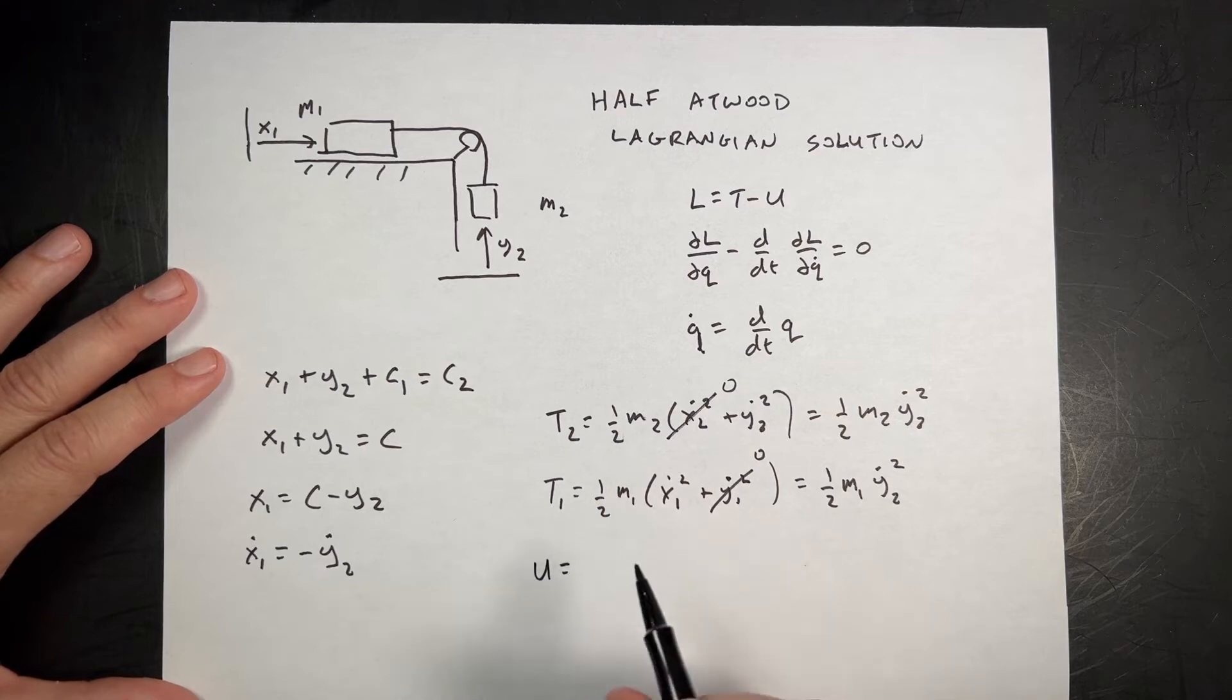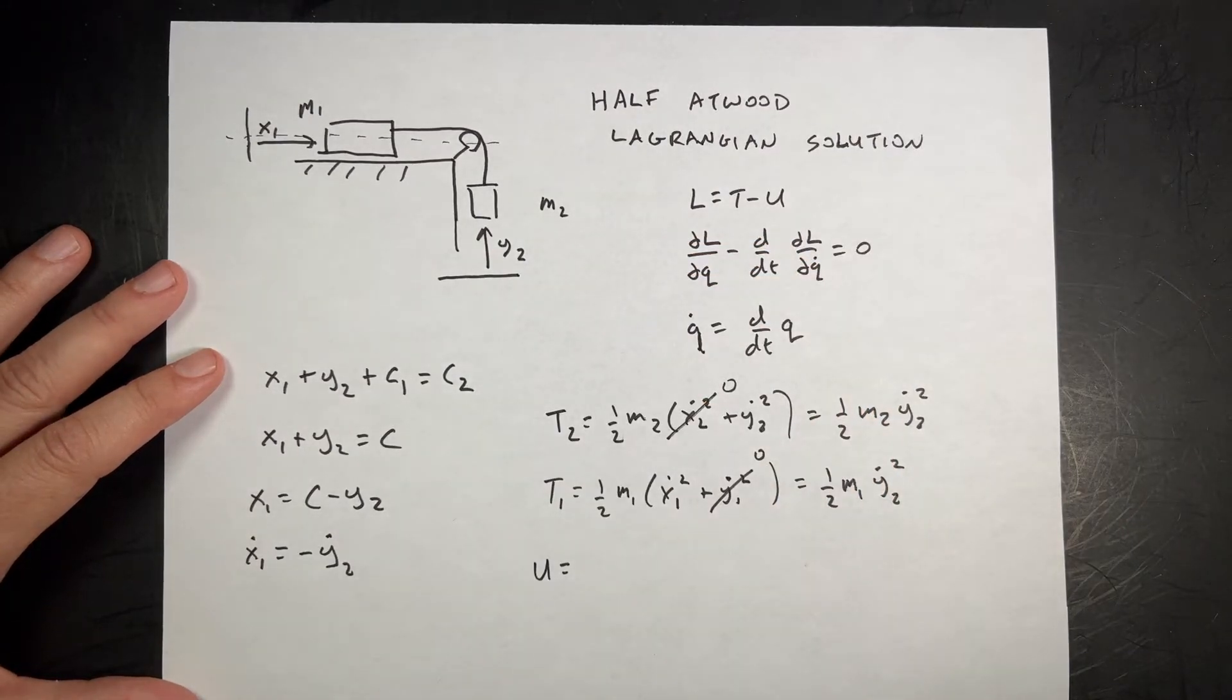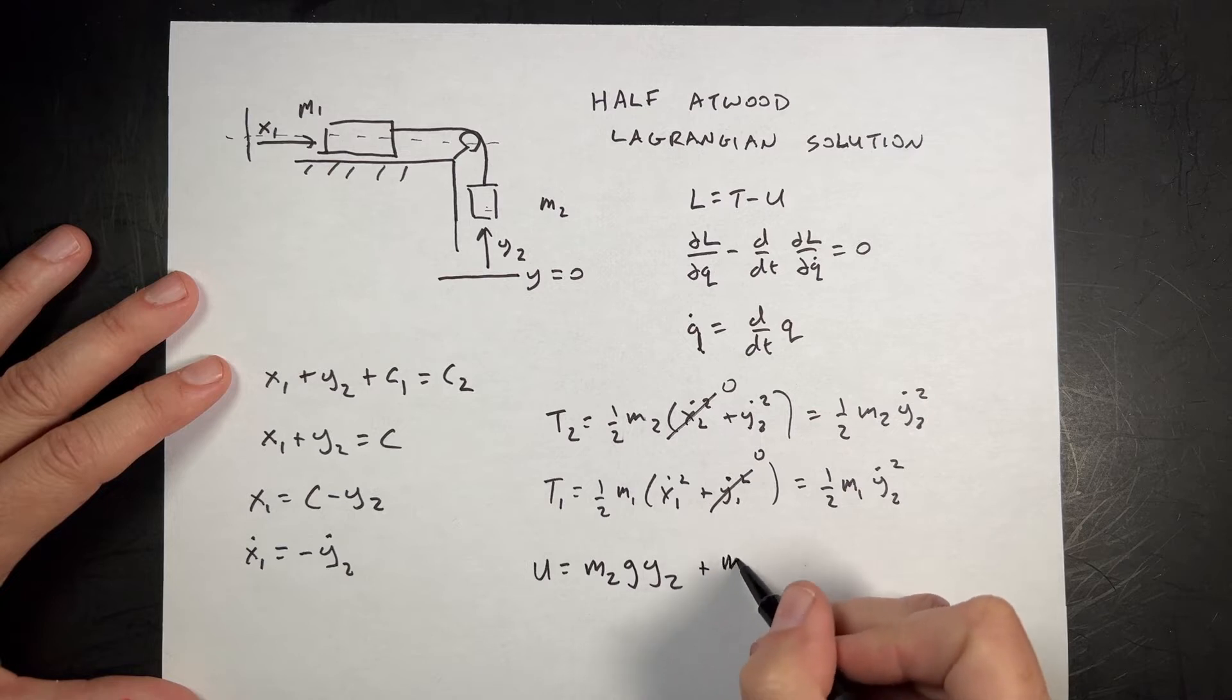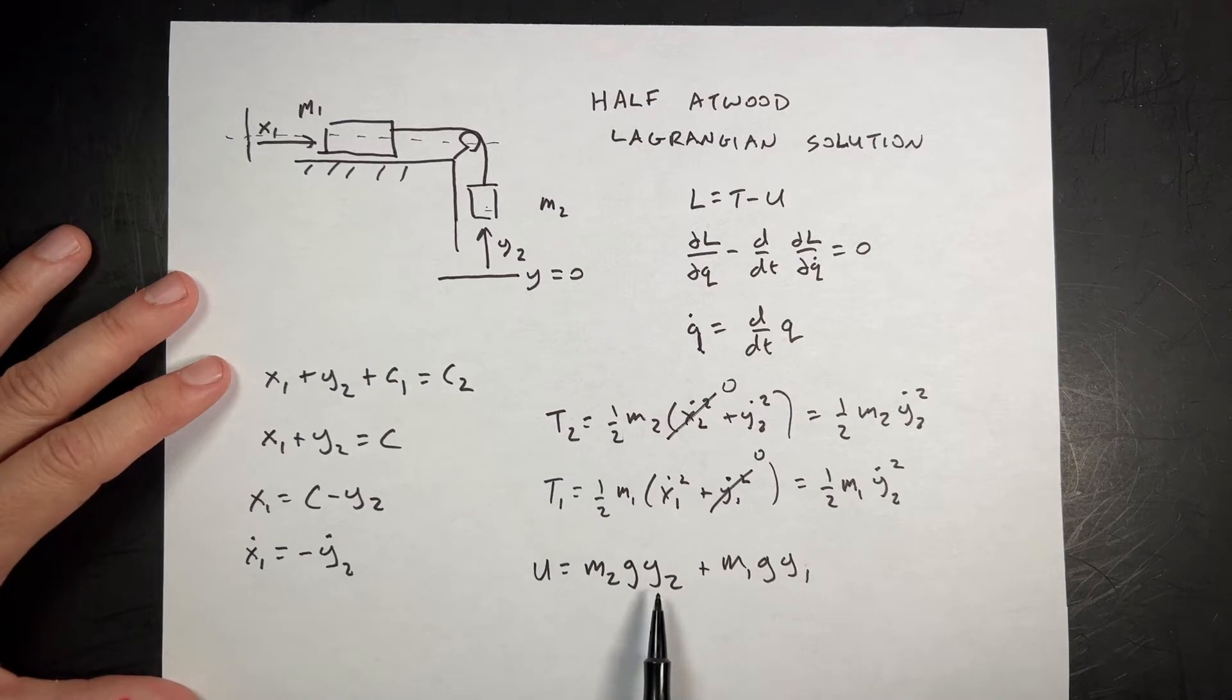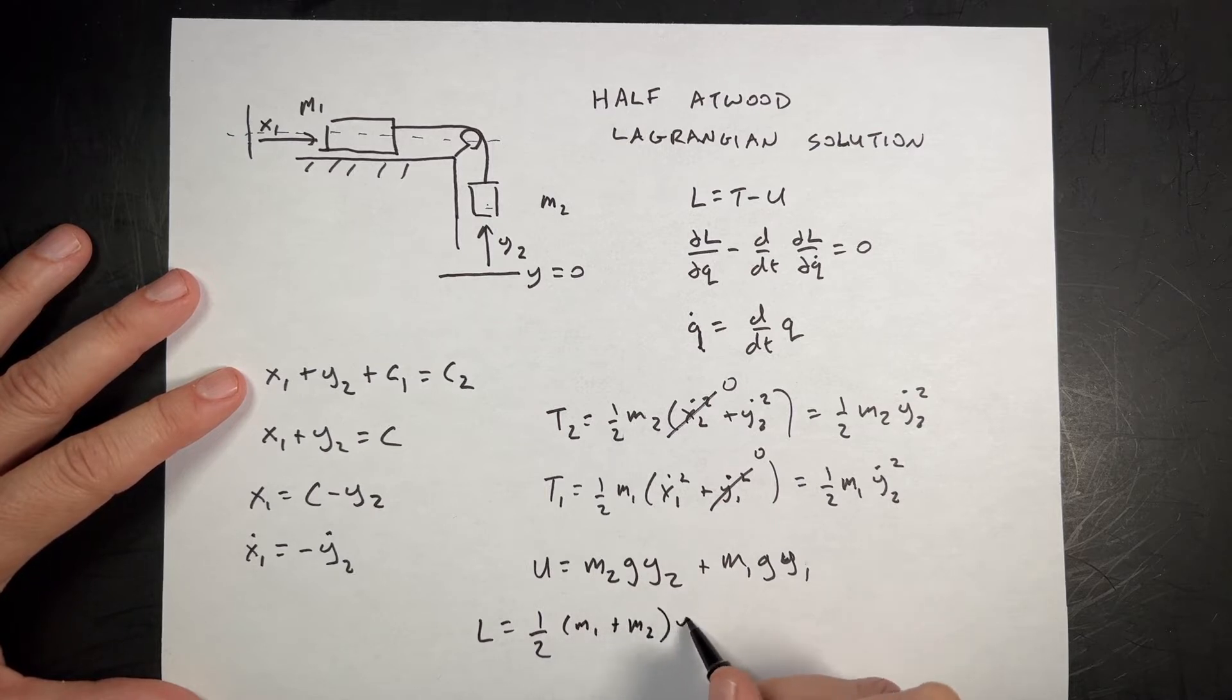So the total kinetic energy is the sum of those. Now what about the potential? I'm going to say this is y equals zero. The potential of this mass is going to be m2 g y2 plus m1 g y1. I'm going to leave it like that. Remember y2 changes, Y1 does not. Y1 is constant. With that I can write the Lagrangian L equals T minus V. Notice these both have a y2 dot squared, so I can write this as one-half (m1 plus m2) y2 dot squared minus m2 g y2 minus m1 g y1.